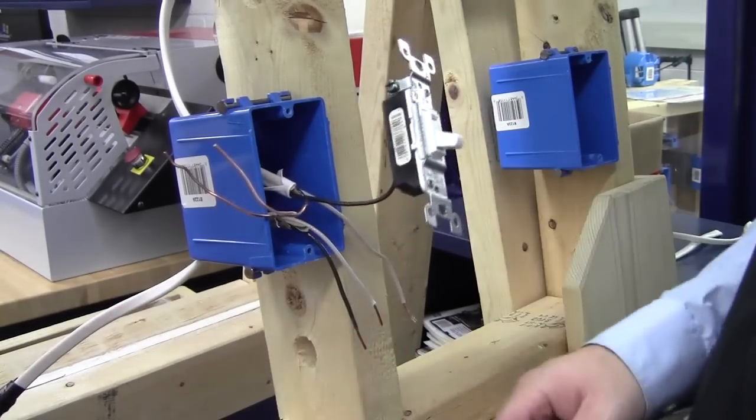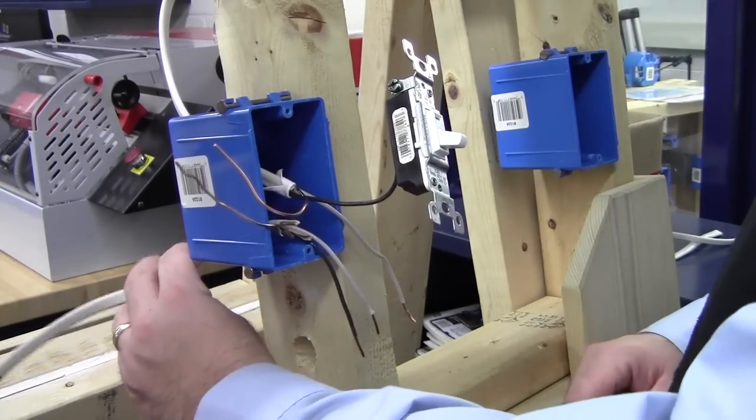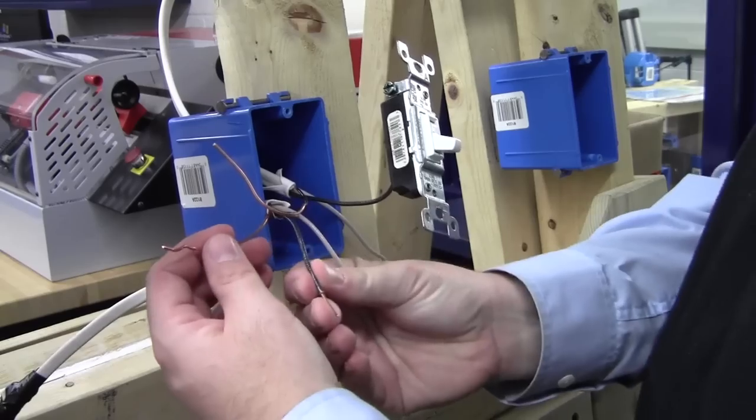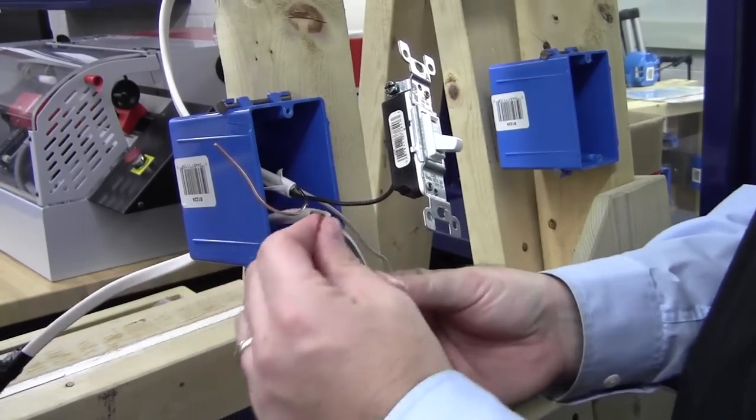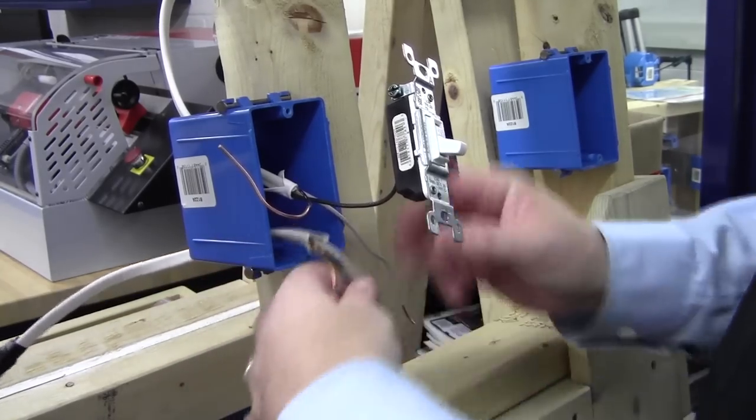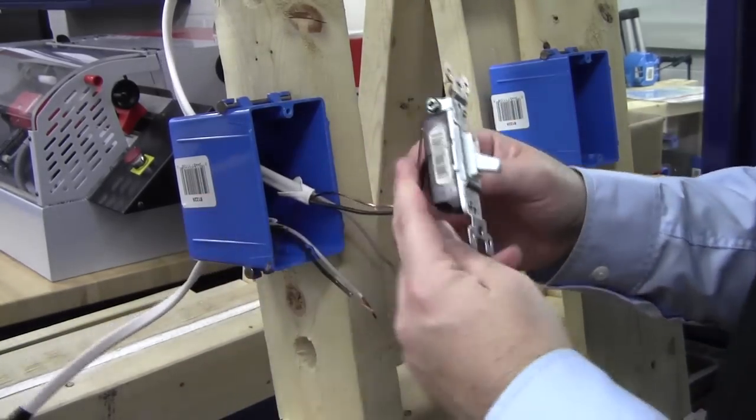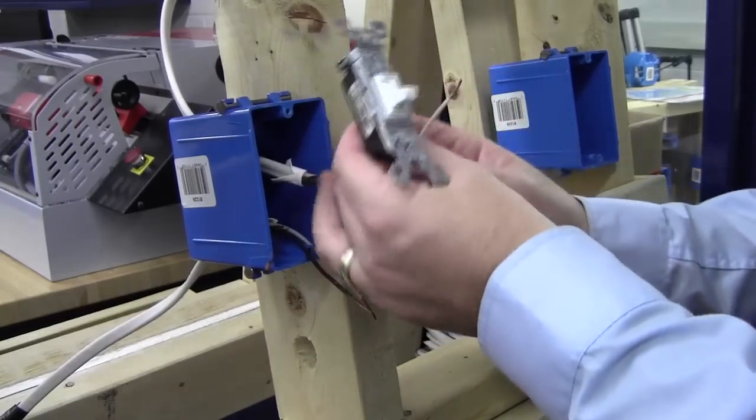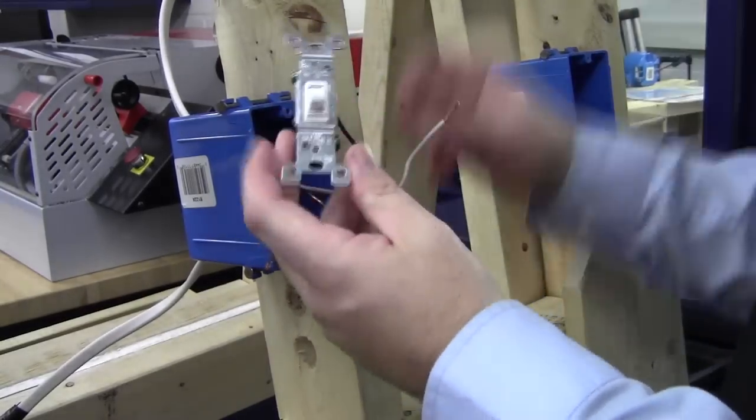What we have done is we have a cable coming in from our source where our power is going to come in. Of course, we have our hot, our neutral, and our ground. And then we have a piece of Romex or cable going up to, in this case, a lamp, a light that would be mounted in the ceiling or something.